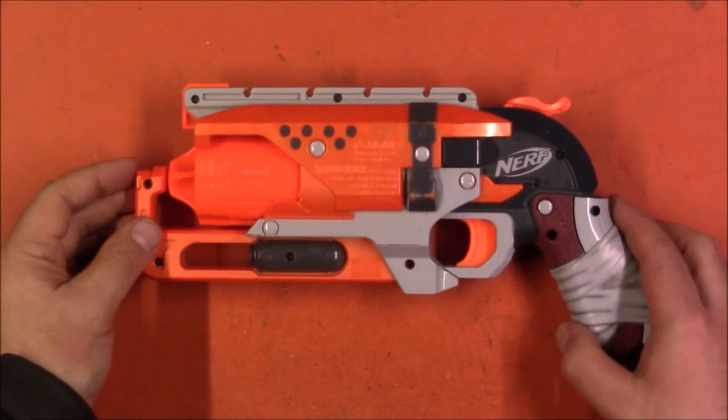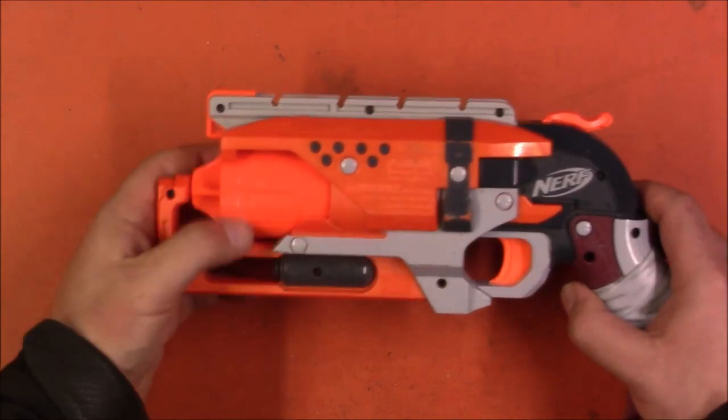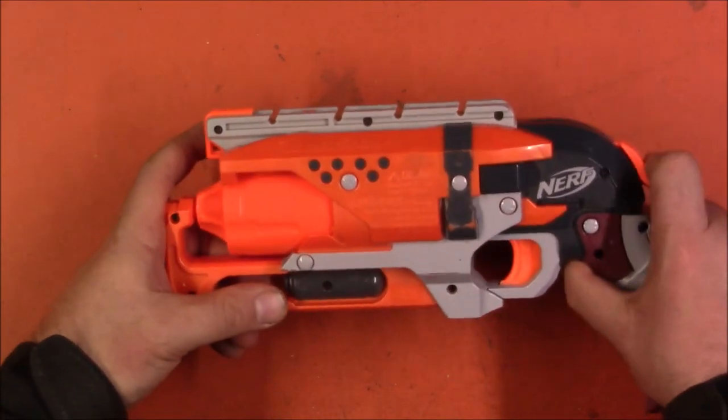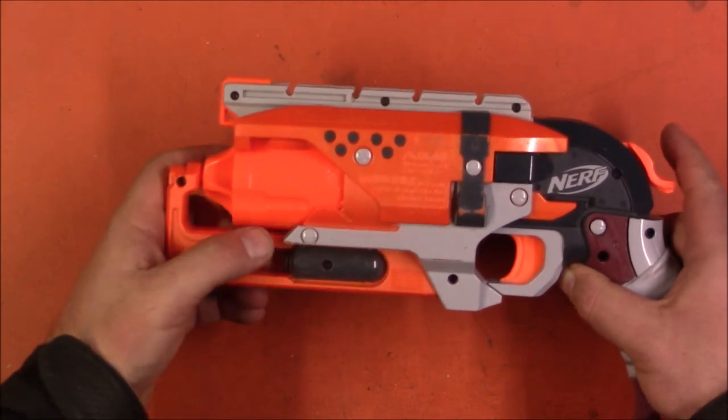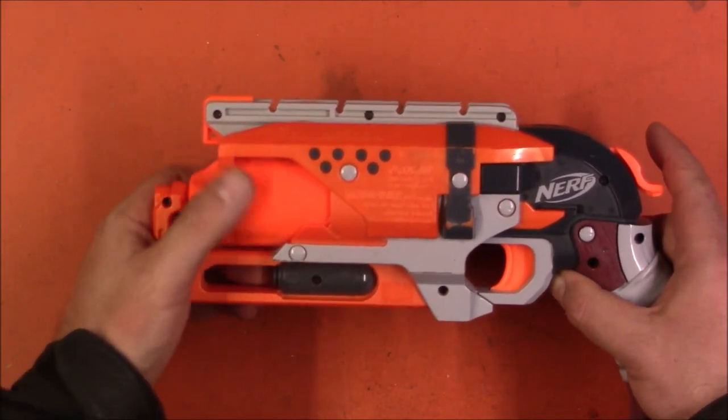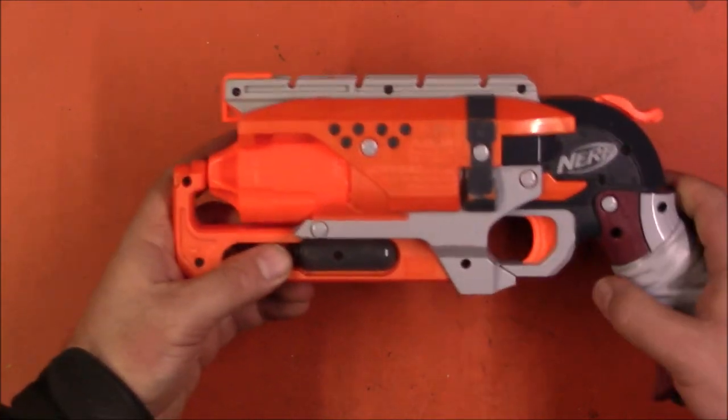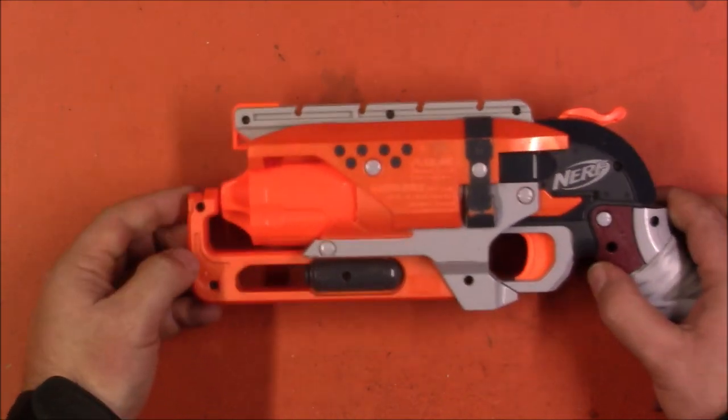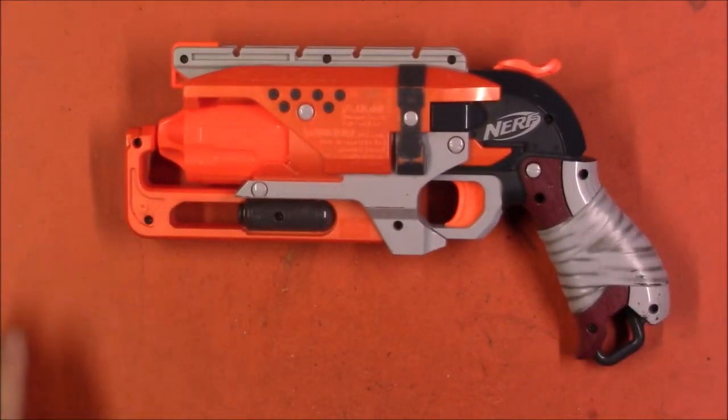All right, we are back together. Let's check our controls. The cylinder will rotate either direction. Prime and lock. It rotated on prime. Correct. We can still rotate after prime. And it fires. So there you go. There is the full disassembly and reassembly of a Hammershot.